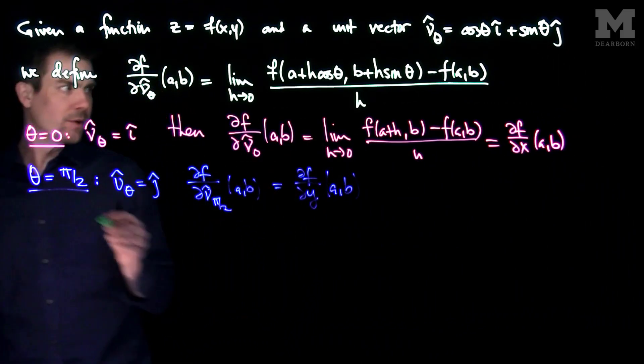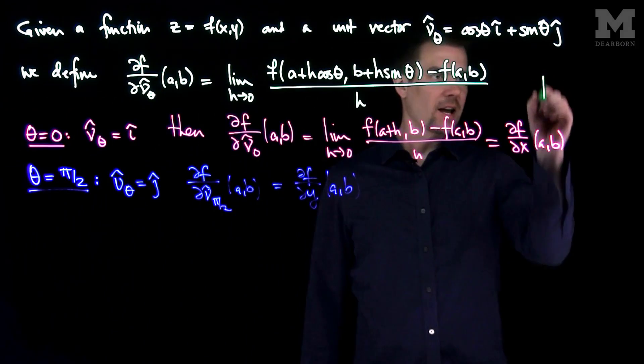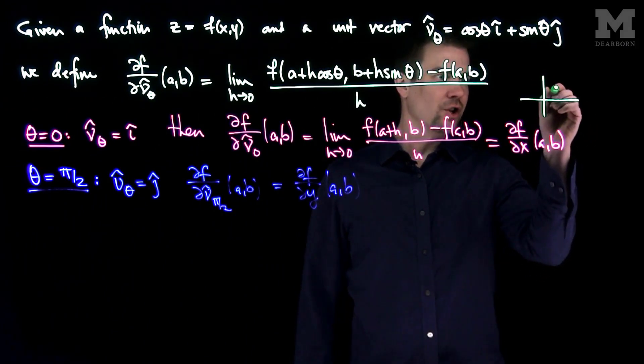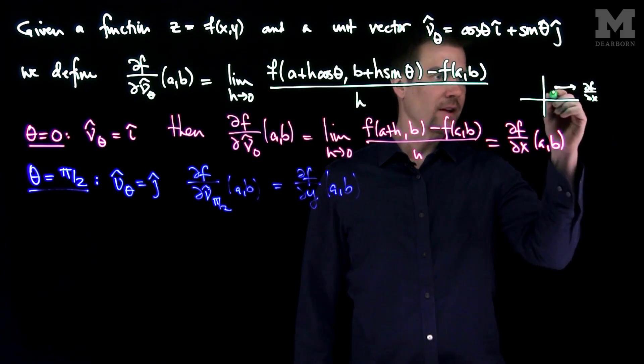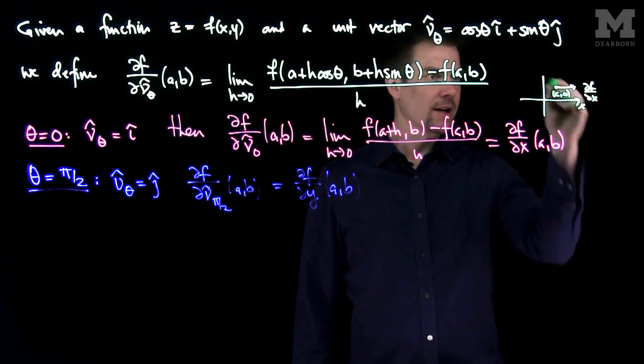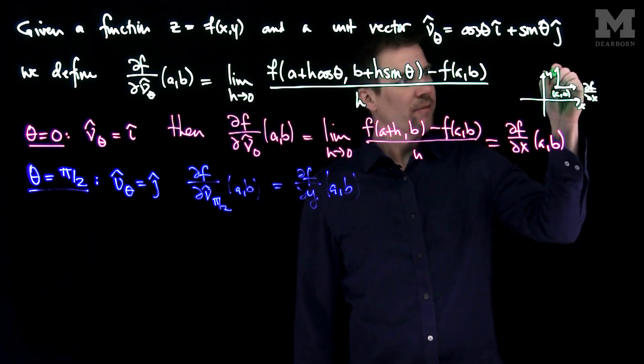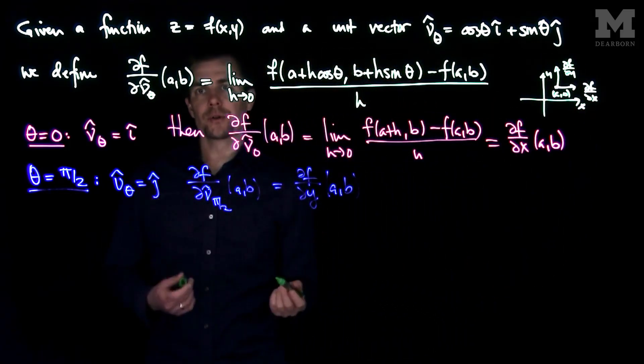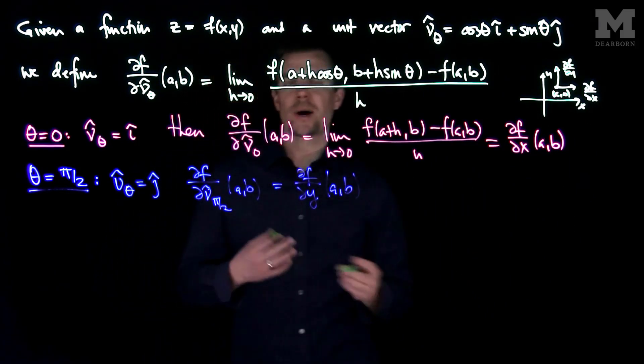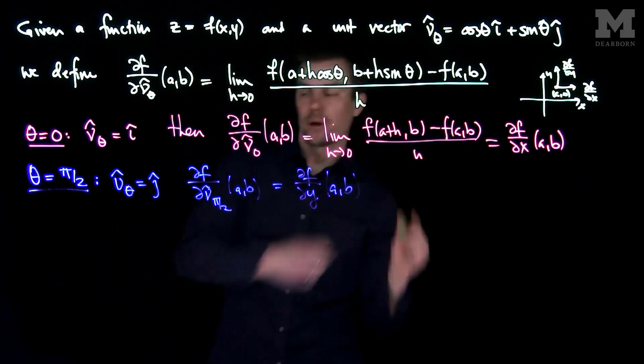What we're doing is, this partial f partial x at ab is telling you how much the function is changing in this direction. That would be the partial f partial x if that's my point ab. That's my x-axis, my y-axis. And then partial f partial y is telling you how much you change in this direction at the point ab. And so now, this directional derivative is telling us information about how the function is changing with respect to any angle.